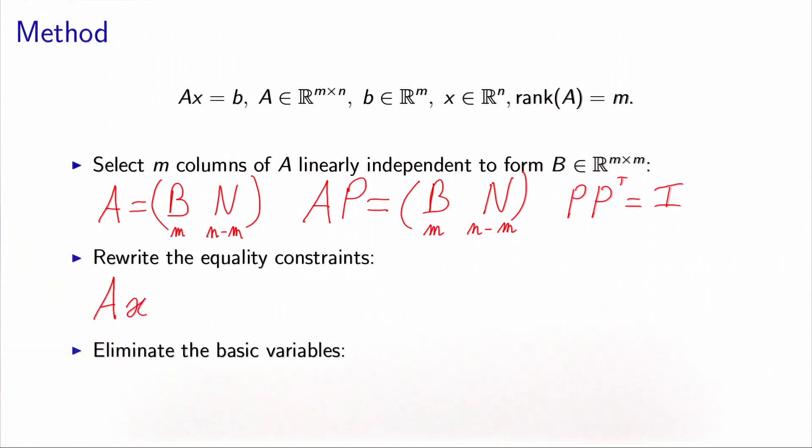So now we can rewrite the equality constraints using this decomposition. We have A, so let's use now the fact that P times P transpose is equal to I, so this can be written AP P^T x. And I can consider the two parts here. AP, we just saw that it's a matrix which is decomposed into two parts, a square matrix B and a matrix N.